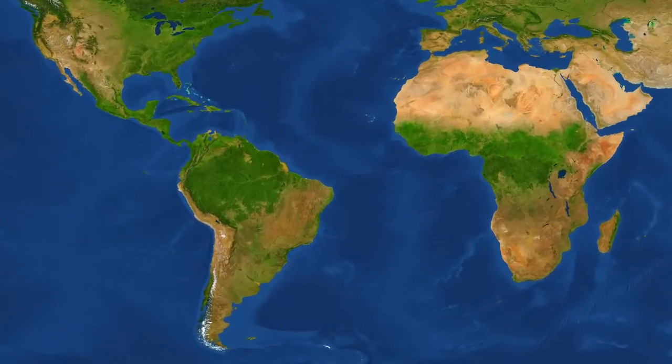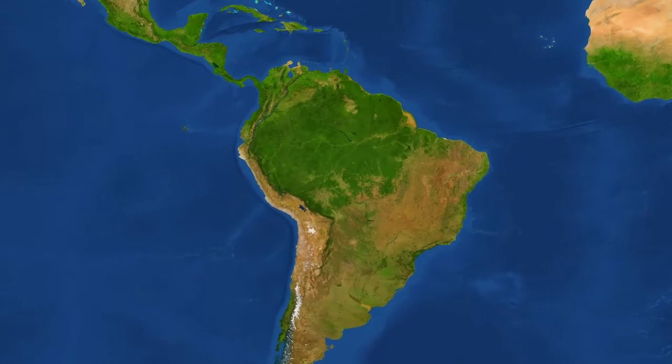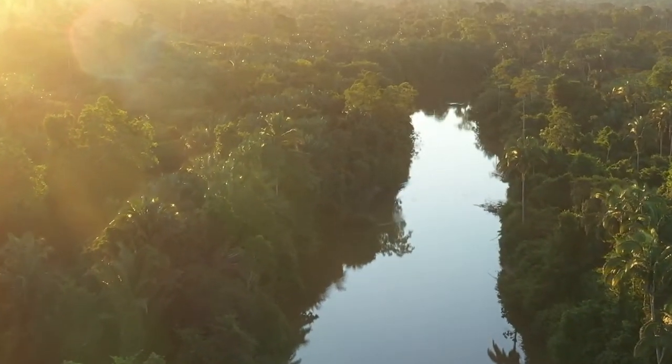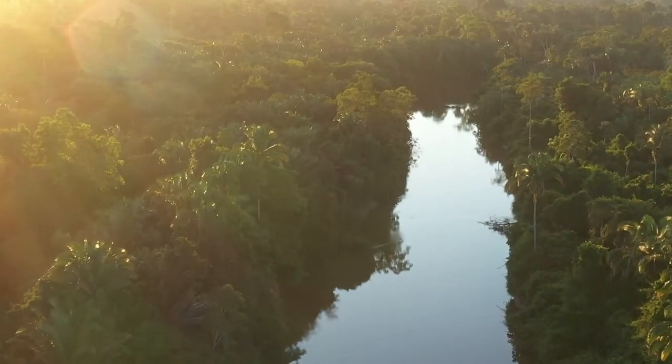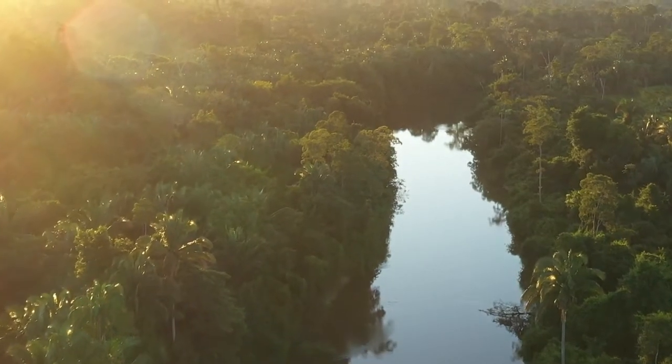The Amazon rainforest spans nearly one and a half billion acres of South America. It is one of the most dense and diverse ecosystems on Earth, and scientists estimate that it may be home to as many as 80,000 different species of plants.